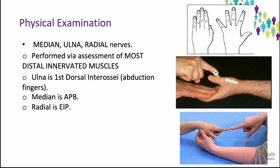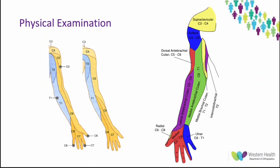The terminal nerves from the brachial plexus are the median, ulnar and radial nerves, assessed by examination of the most distal innervated muscle. The most distal muscle innervated by the ulnar nerve is the first dorsal interosseous, which abducts the index finger. The most distal muscle innervated by the median nerve is abductor pollicis brevis — ask the patient to abduct the thumb against resistance. The most distal muscle innervated by the radial nerve is extensor indicis proprius — ask the patient to extend the index finger against resistance. To complete the assessment, check sensation in the dermatomes and the reflexes: biceps for C6, triceps for C7, and supinator reflex. Then assess the vascular status of the limb by palpation of the pulse.